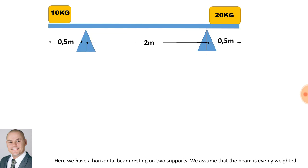Here we have an example of a two-fulcrum beam — a horizontal beam resting on two supports. We assume that the beam is evenly weighted. The distance between the supports is 2 meters, and the distance on either side of the support is 0.5 meters. We have two objects resting on the beam, one of 10 kilograms and one of 20 kilograms.